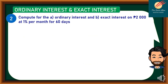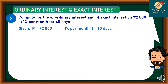Let's consider Example number 2. Compute for the Ordinary Interest and Exact Interest on P2,000 at 1% per month for 60 days. Let's identify the given: the Principal is P2,000, the Rate is 1% per month, and the Time is 60 days.